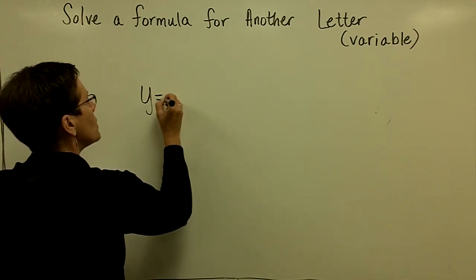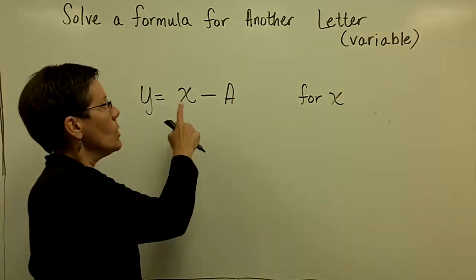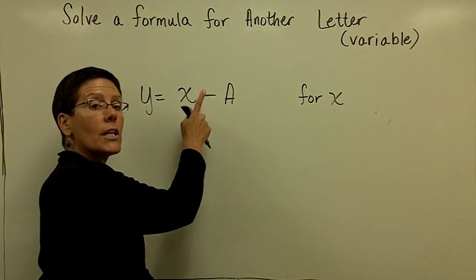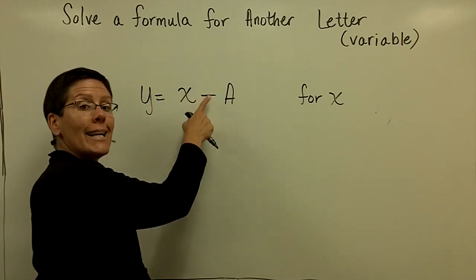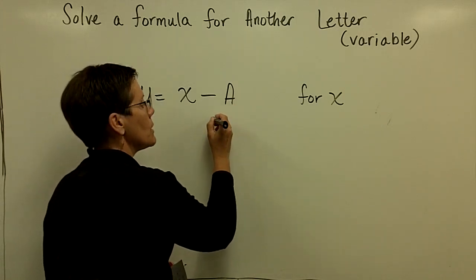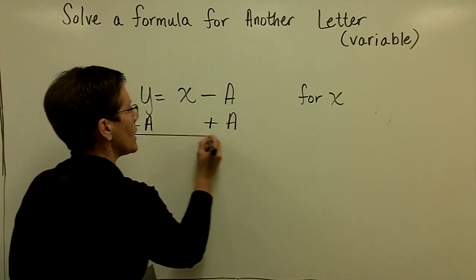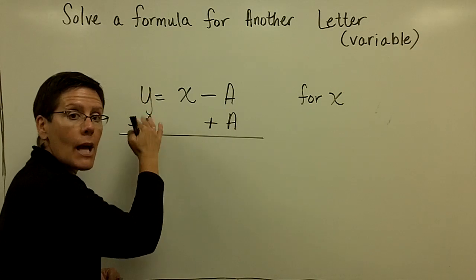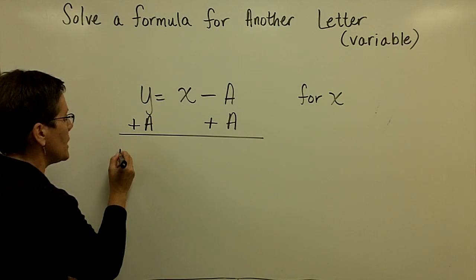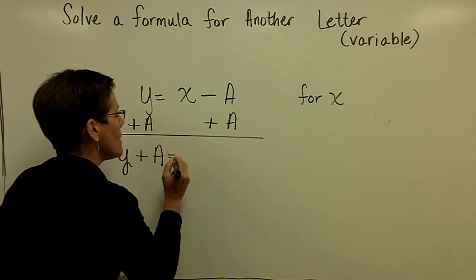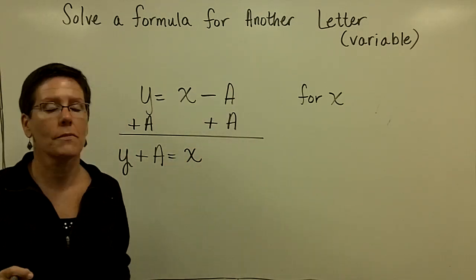Let's look at y equals x minus a, and let's solve for x again. Two terms over here, because a minus sign is separating those two terms. To get x all alone, it's got a minus a hanging out with it. The only way to get rid of a minus a is to add an a to both sides of this equation. I just have to list them as y plus a because I cannot combine them. Those combine to be zero, and I have x all alone. I have solved for x.